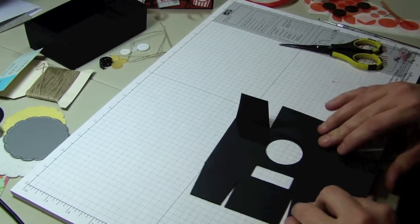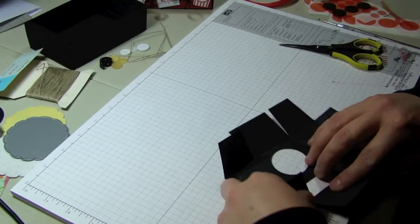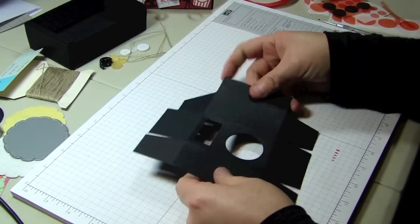I'm going to fold along the score lines again. It just gives your box the memory that it needs to be less of a pain when you're adding your adhesive and things.